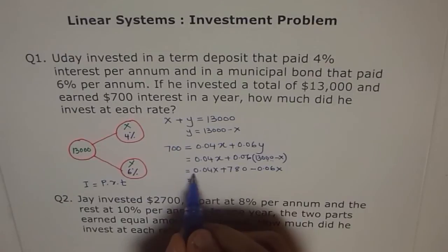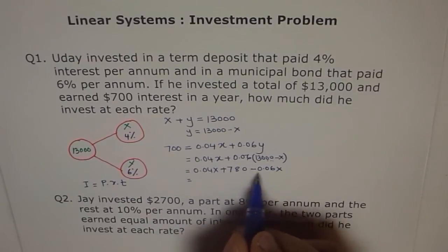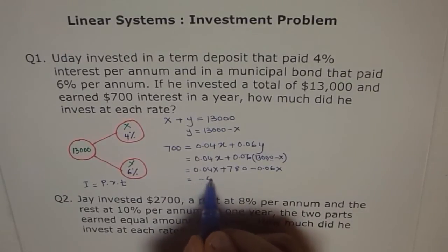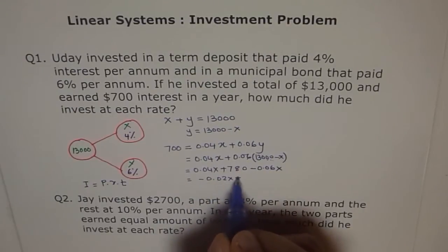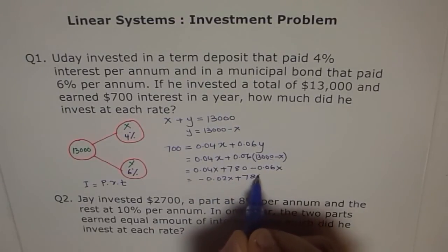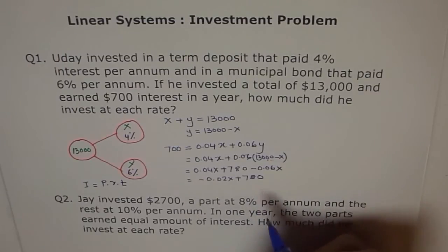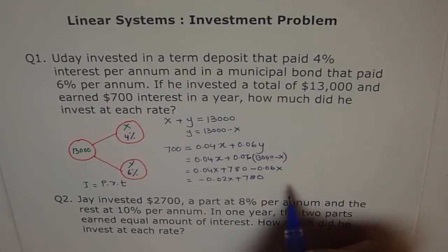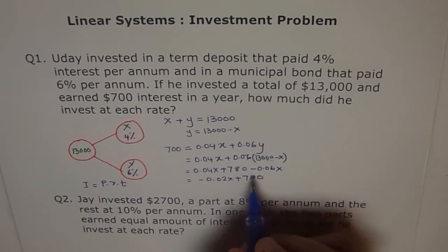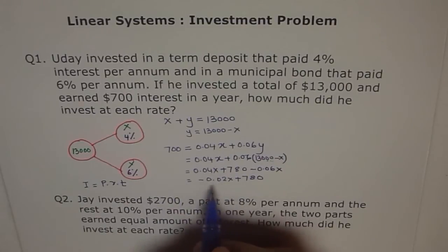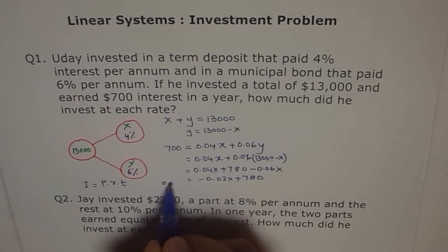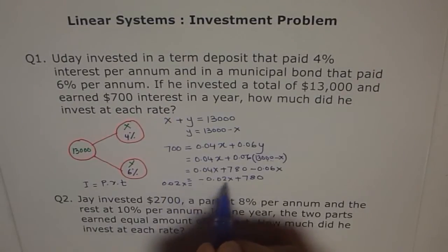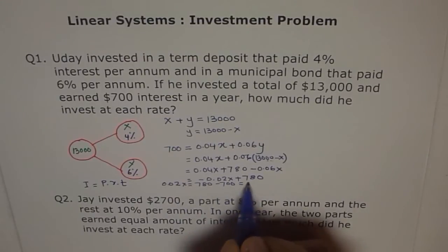Now, let's go further. 0.04 minus like terms. Combine the like terms. We get minus 0.02X plus 780 equals 700. Now what? We will take these terms to this side. We will take this as negative. We will bring X on this side.